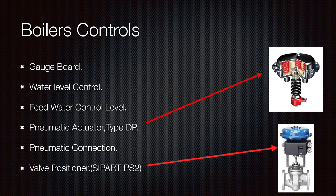Let's see what it includes: we have the gauge board, the water level control, the feed water control level, the pneumatic actuators, differential pressure, the pneumatic connections, and the valve positioner C-part PS2.